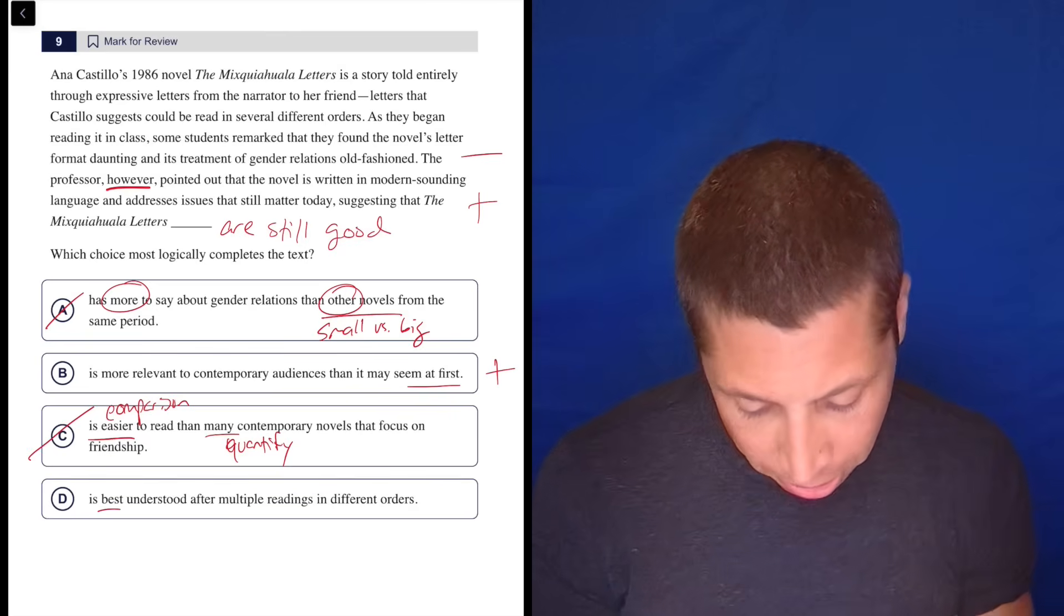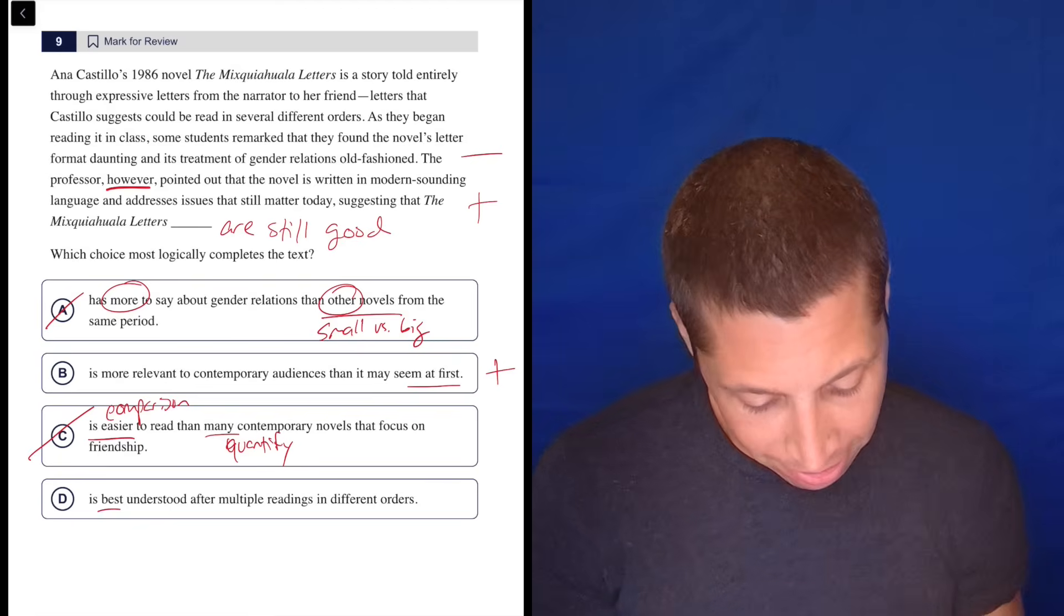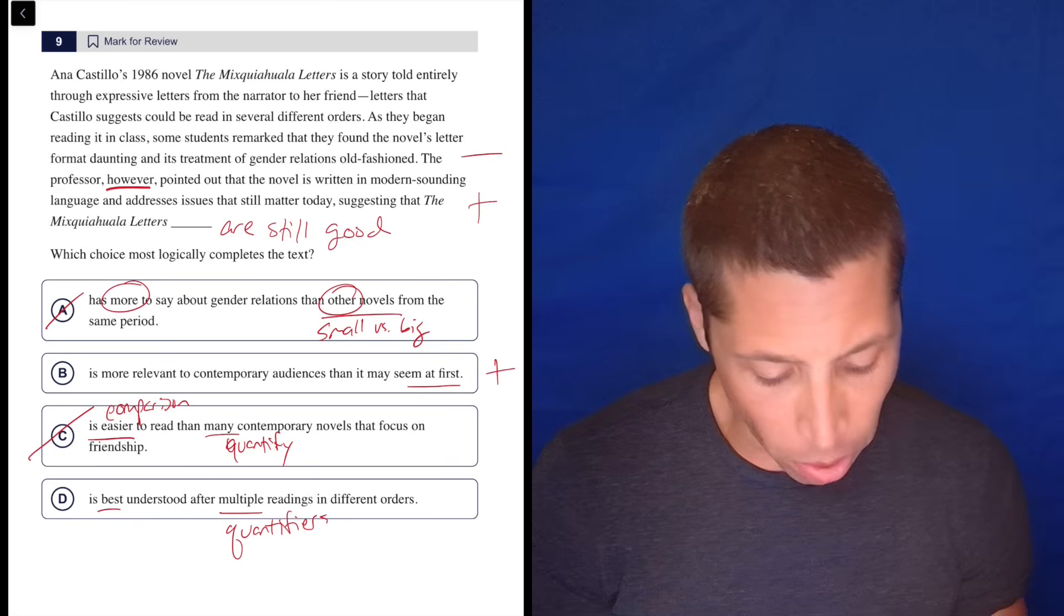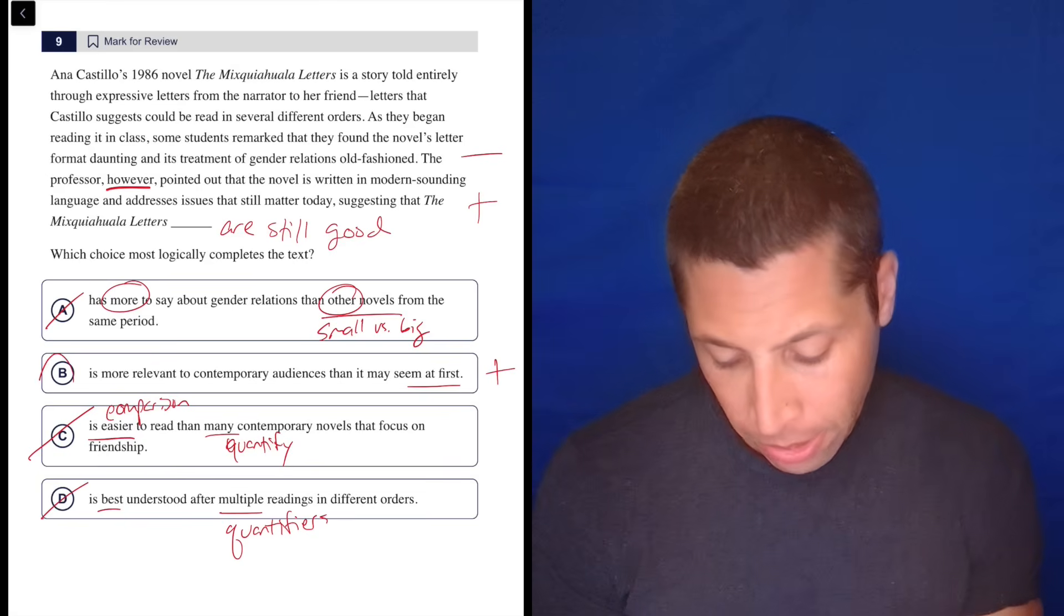Choice D: is best understood after multiple readings in different orders? No. I don't know. I mean, maybe. But are we reading it multiple times? Are we quantifying the number of times we're reading it? No. So it's B. Yeah.